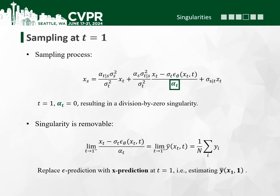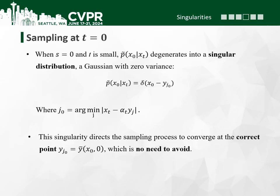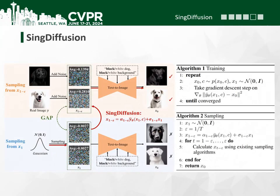For t equal to 1, we found that this singularity is conditionally removable by using x-prediction instead of epsilon-prediction. For t equal to 0, we found that this singularity is an inherent property of diffusion models and does not need to be avoided. Based on these conclusions, we propose a novel model, sinc diffusion, to tackle the singularity at t equal to 0.